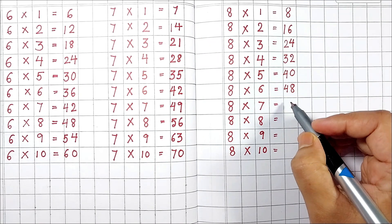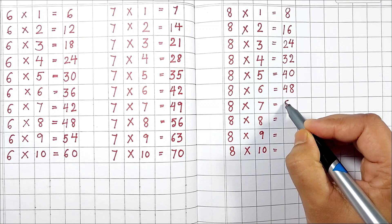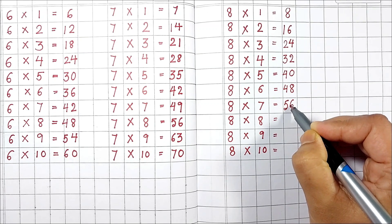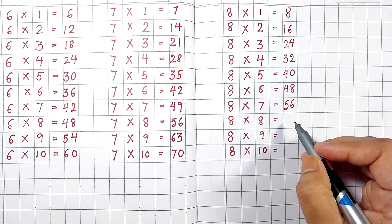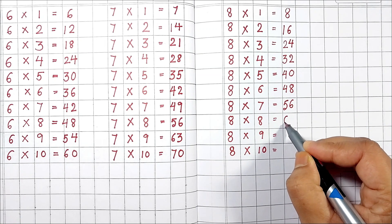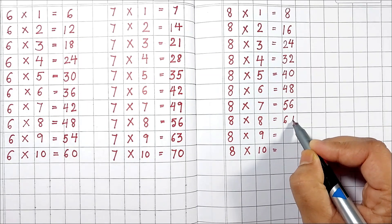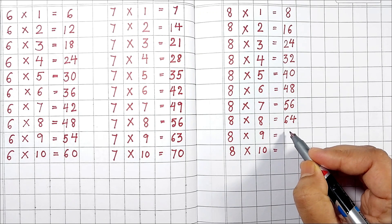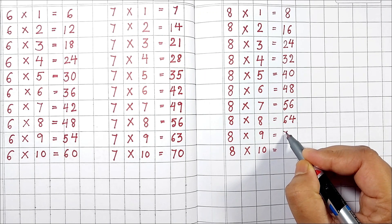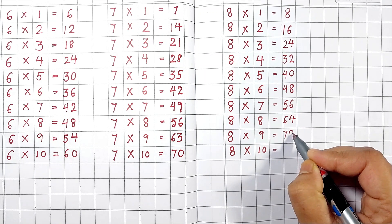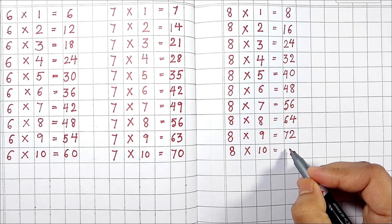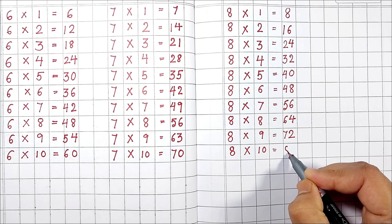8 7's are 56. 8 8's are 64. 8 9's are 72. 8 10's are 80.